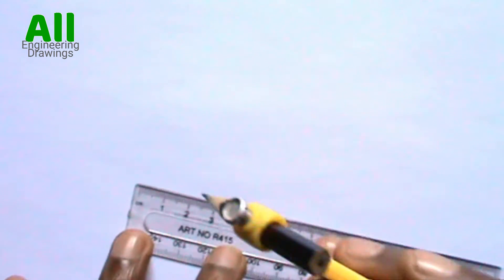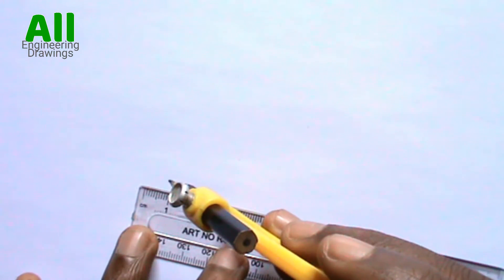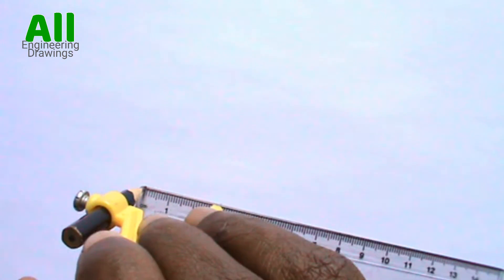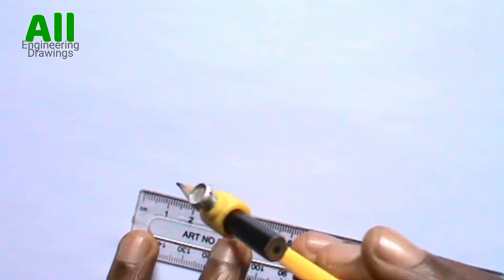To draw a circle, you have to use your compass to take the required radius from your ruler this way. Then you have to now draw your circle.